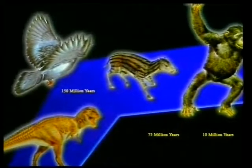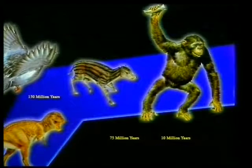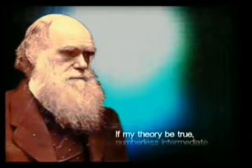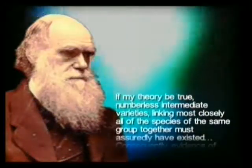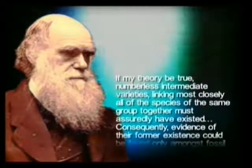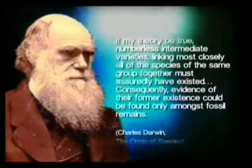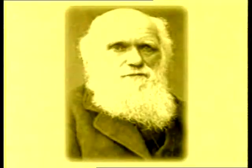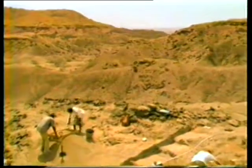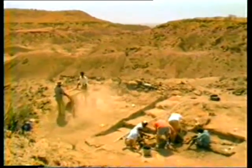In his book The Origin of Species, Darwin wrote: 'If my theory be true, numberless intermediate varieties, linking most closely all of the species of the same group together, must assuredly have existed. Consequently, evidence of their former existence could be found only amongst fossil remains.' However, Darwin was also well aware that the fossil record contained absolutely none of his intermediate forms.